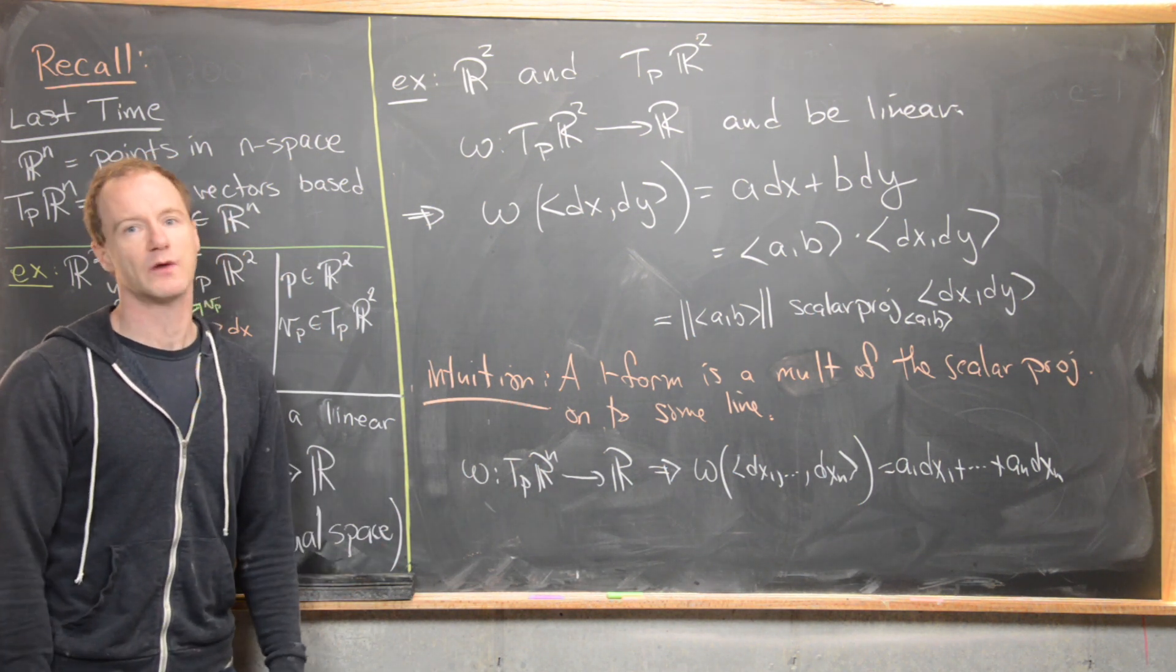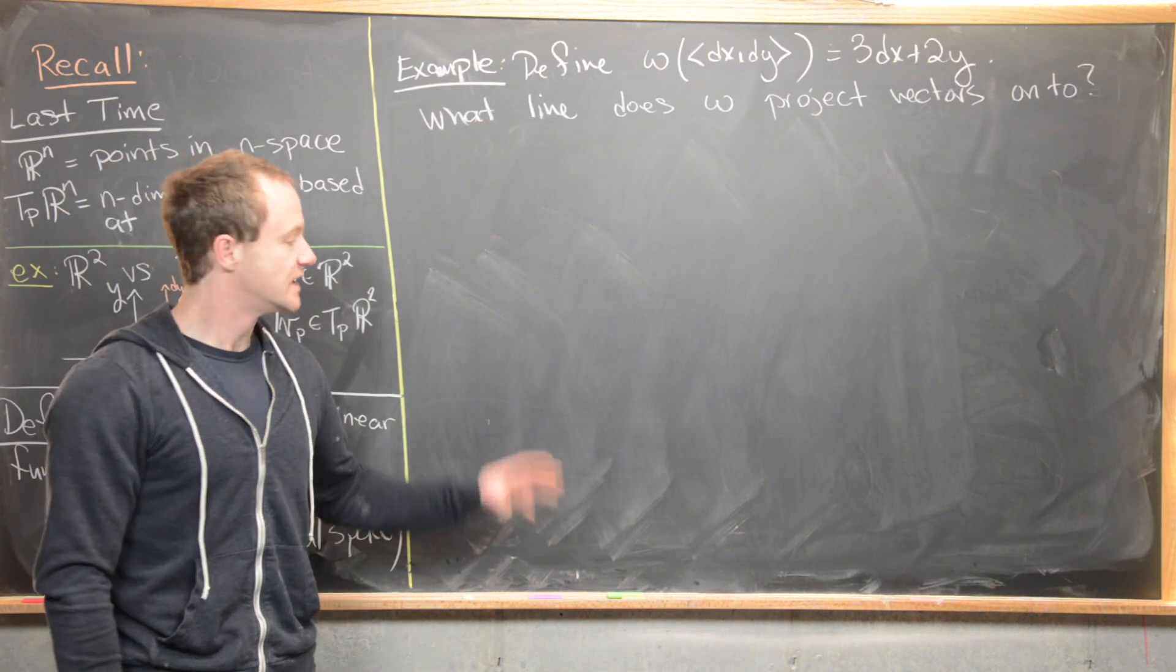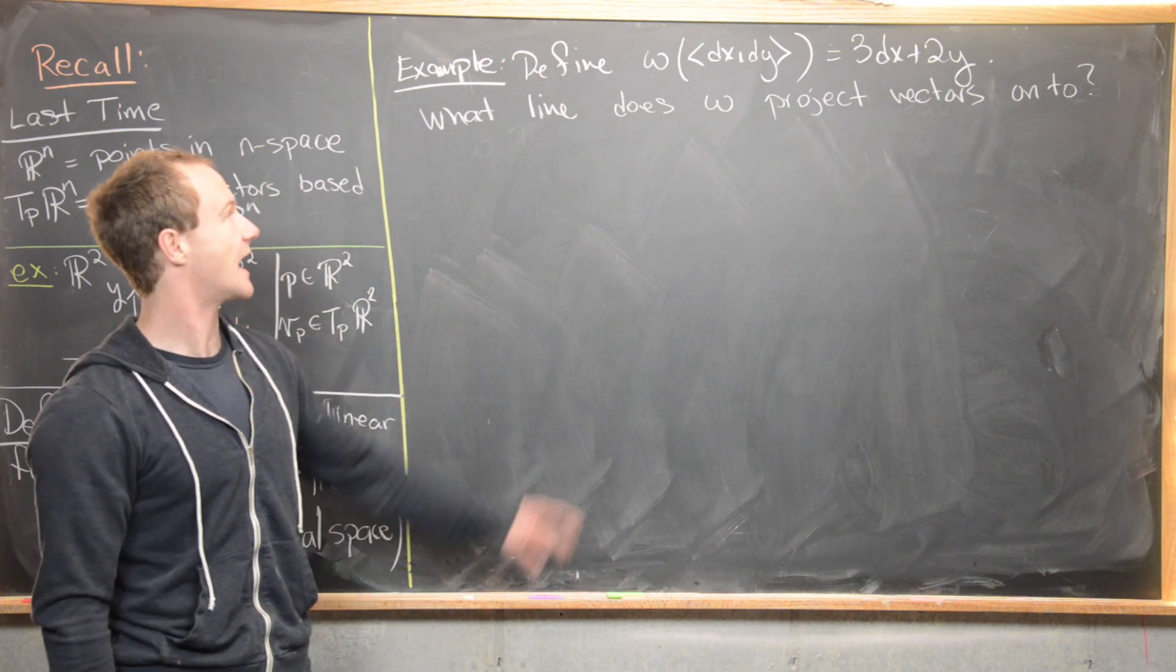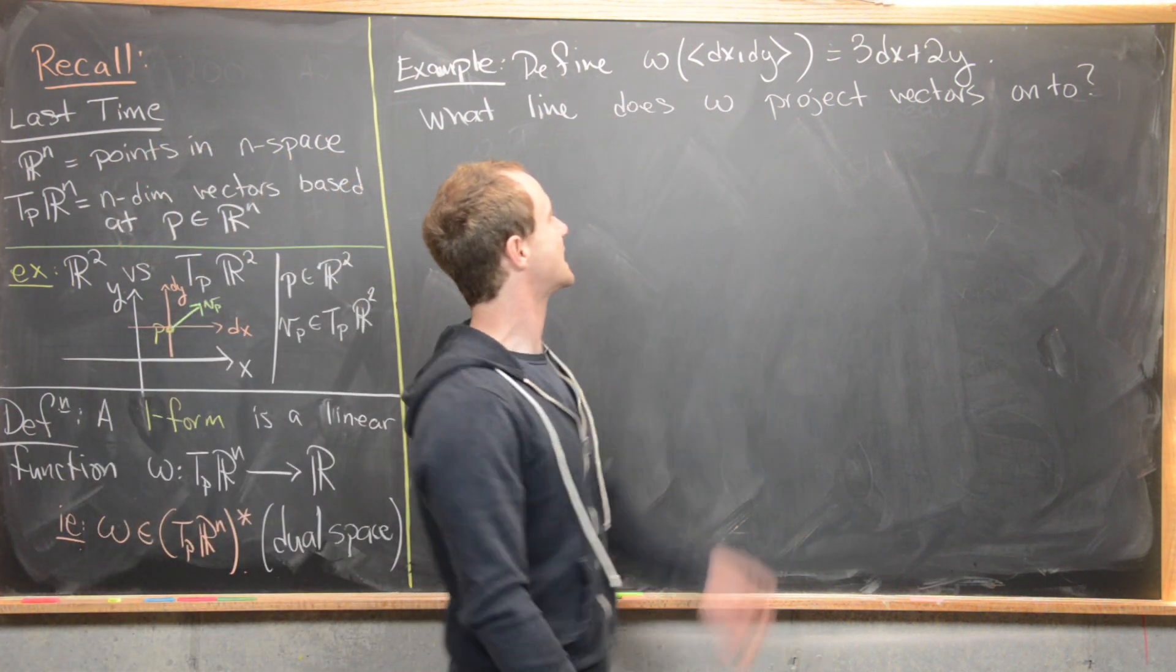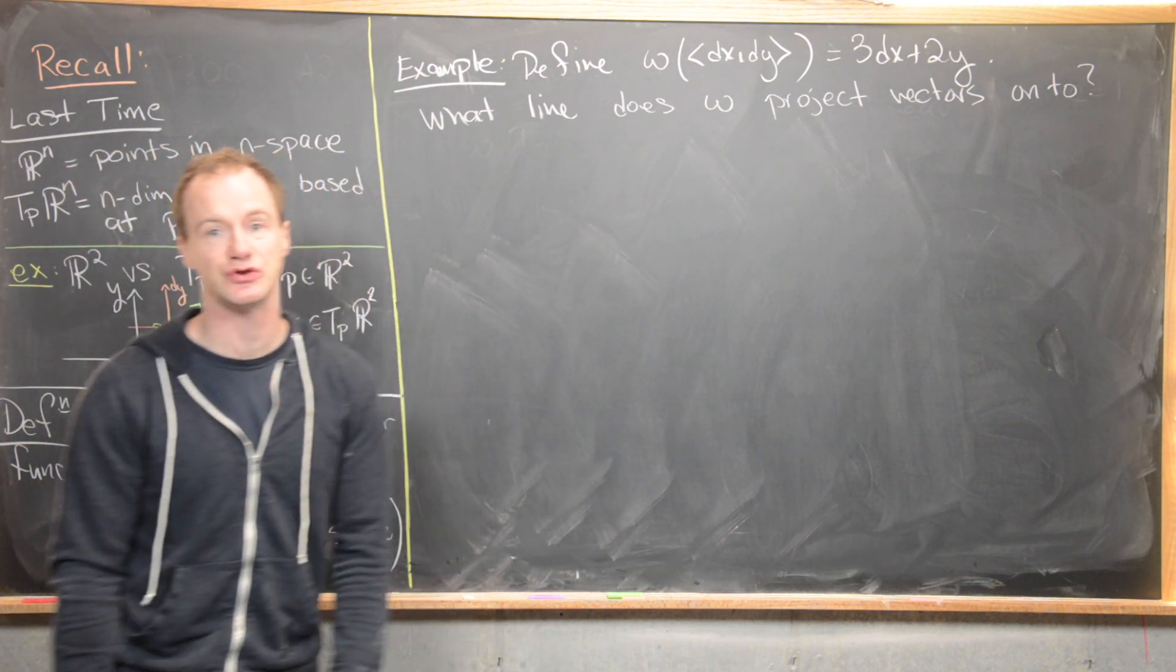I'm going to go ahead and clean up the board. We're going to look at a couple of simple examples using this intuition. So now we want to do some examples built off of that intuition that we had. Let's first of all define this one-form as omega attacking the vector (dx, dy) is equal to 3dx + 2dy.